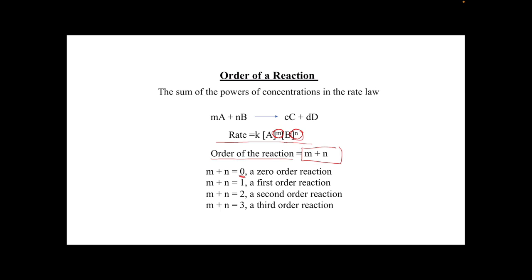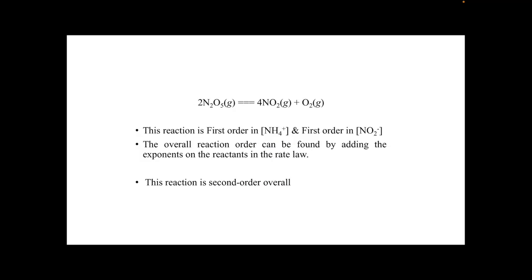In some cases we would have a zero-order reaction, a first-order reaction, or second and third-order reactions. To calculate the order of the reaction, it's very easy by adding the two values of the powers of concentration as seen in the rate law. The value produced is the order of the reaction.